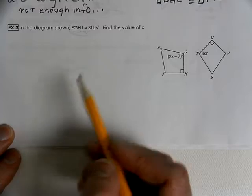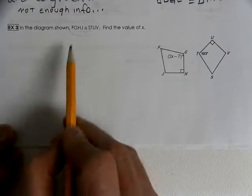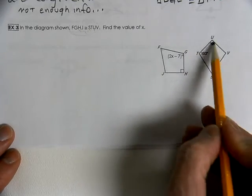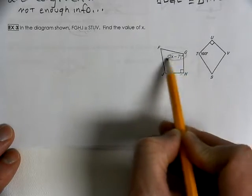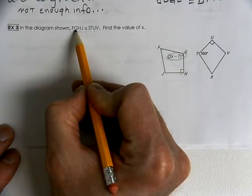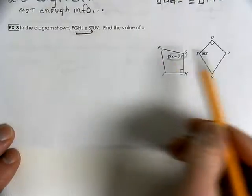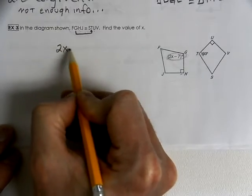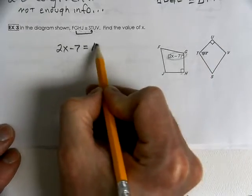What that tells us is that their different parts are congruent to each other. That tells us that the H is congruent to the U. They both are 90 degrees. Look here. This is giving us G. G is the second letter. It has to match with this second letter, which is the T. So, that's why we know that 2X minus 7 has to be the same as 103.